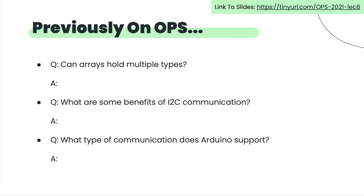Previously on ops, here are some things we talked about. Can anyone answer: can arrays hold multiple types? You can make different arrays for each type, but if you make a single array, it can only hold one type at a time. You can make different arrays of different types, though.